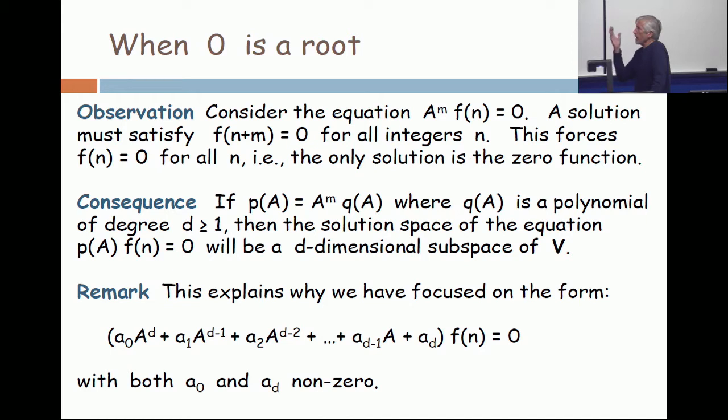So what does A to the m on f of n do? It advances the n m times. So that equation means f of n plus m must be zero for all n. But that's just a shift. So if f of n plus m is zero for all n, then f of n is zero for all n. It's always zero.